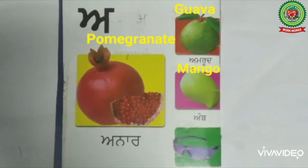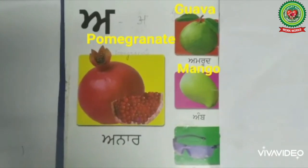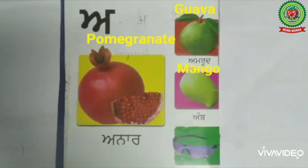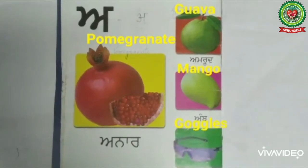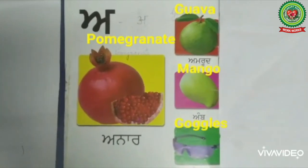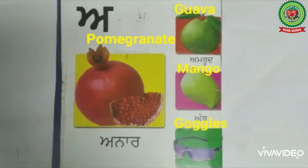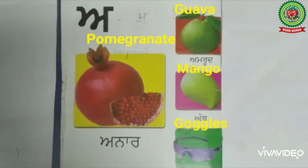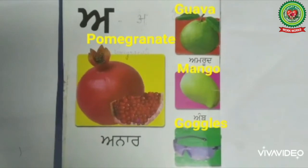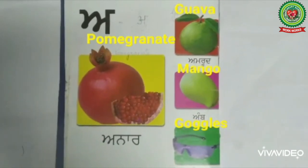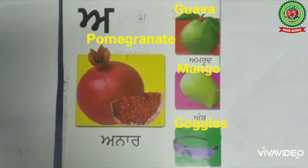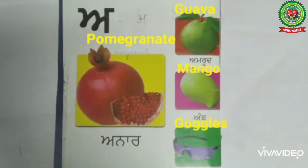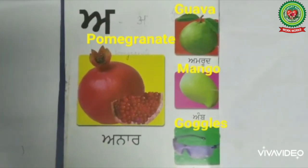Now look at the last picture and start reading: Ada, A — Anak. Anak means goggles. G-O-G-G-L-E-S. Goggles.